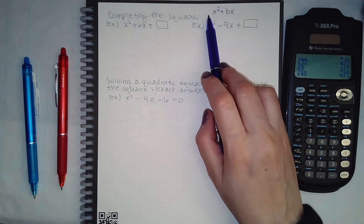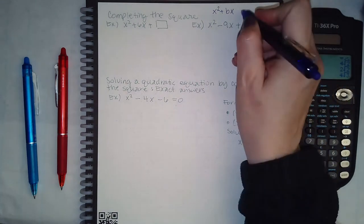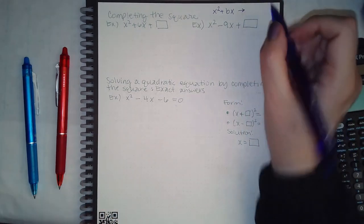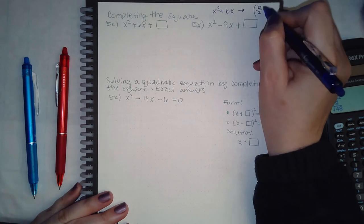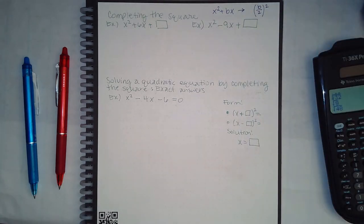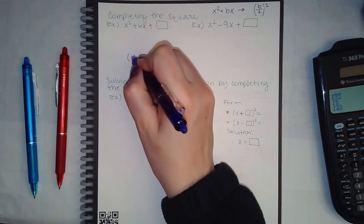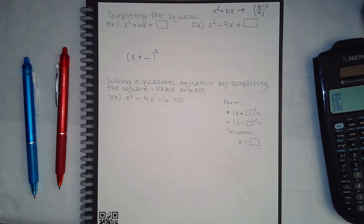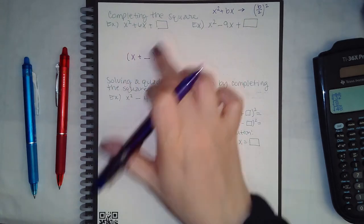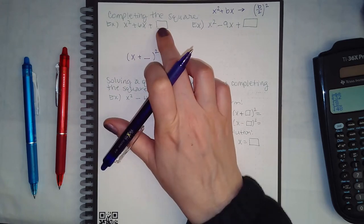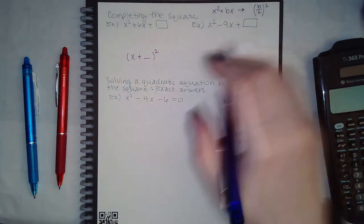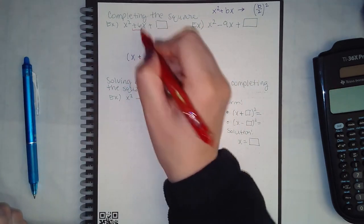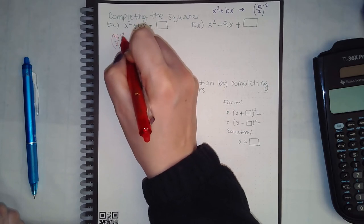As long as there's no number in front of x squared, the magic number that goes in the box to complete the square comes from that b — the coefficient — over 2, squared. Completing the square means turning the expression into (x + something)². What you need is the number such that when you foil it all out, you get the original expression.